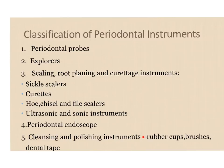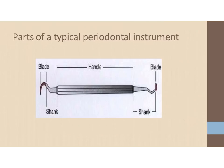The main parts of a typical periodontal instrument are: the handle, which you hold; the shank, the area that connects the handle to the blade; and the blade, which is the cutting edge or the active working edge that you make strokes with.